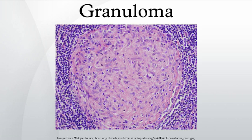Listeria monocytogenes infection in infants can cause potentially fatal disseminated granulomas called granulomatosis infantiseptica following an in utero infection. Pneumocystis infection in the lungs is usually not associated with granulomas, but rare cases are well documented to cause granulomatous inflammation. The diagnosis is established by finding Pneumocystis yeasts within the granulomas on lung biopsies.